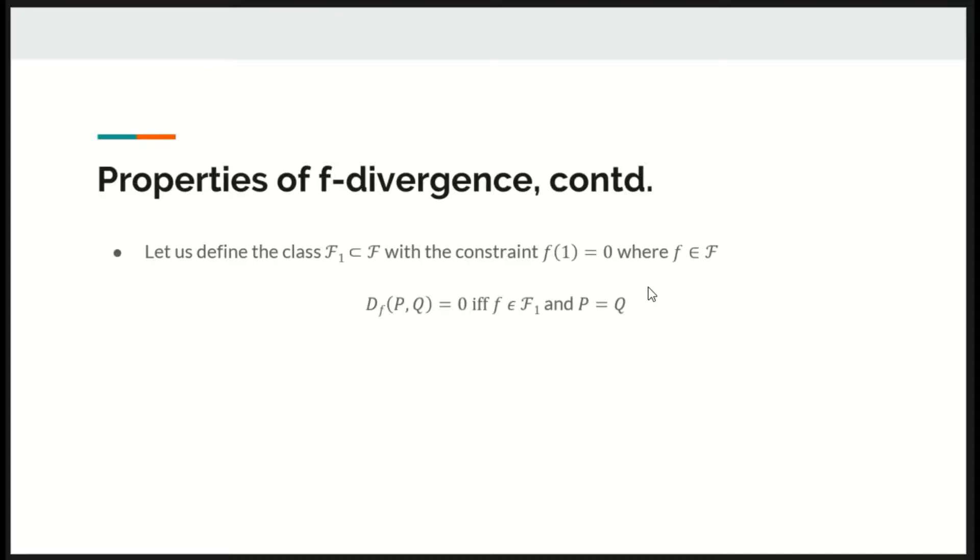Some more properties of F-divergence that are worth mentioning. Let us define a class F1 subset of class F with constraint F of 1 equals 0 where F belongs to class F. Then F-divergence between P and Q is equal to 0 if and only if F belongs to class F1 and P equals Q.